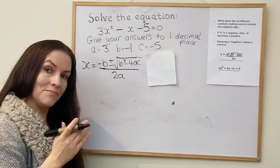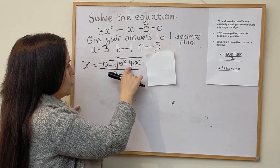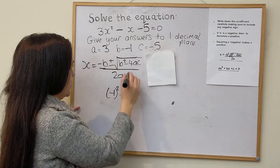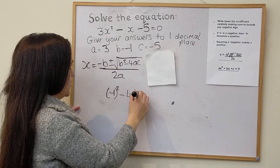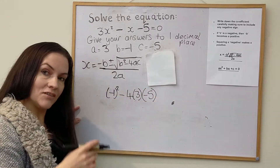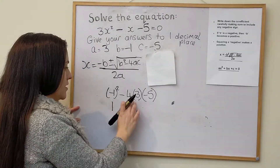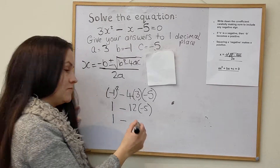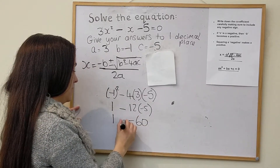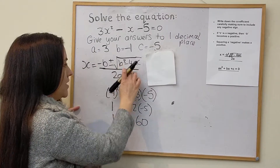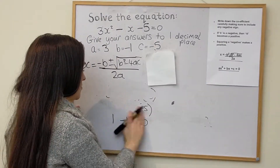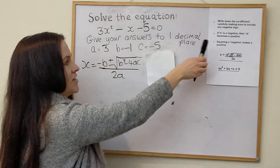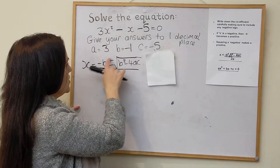As before, I'll work out the discriminant first: b squared minus 4ac. Remember, squaring a negative makes a positive. So b squared is negative 1 squared, minus 4ac, which is 4 times 3 times minus 5. Squaring the negative gives positive 1. Then 4 times 3 is 12, times negative 5 is negative 60. So it's 1 take away negative 60, and two negatives together make a positive, giving 61.